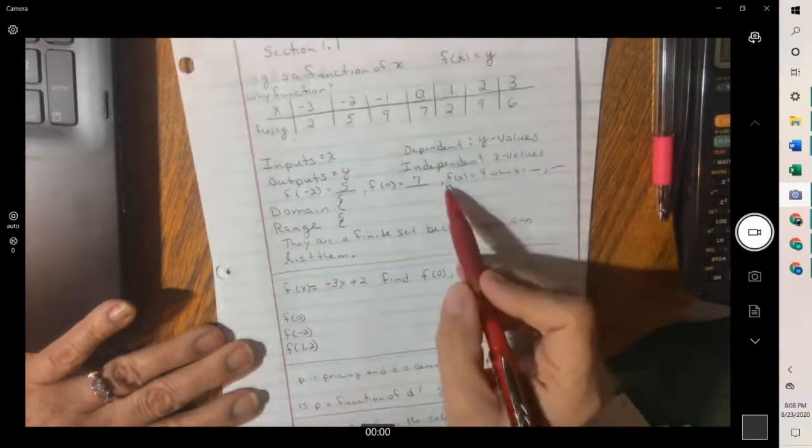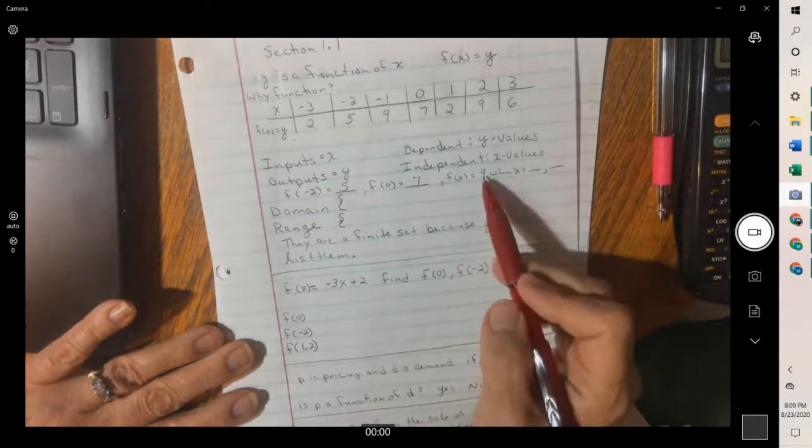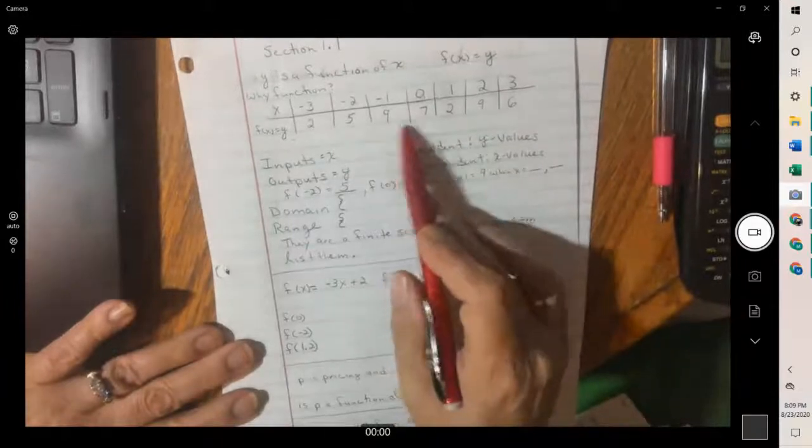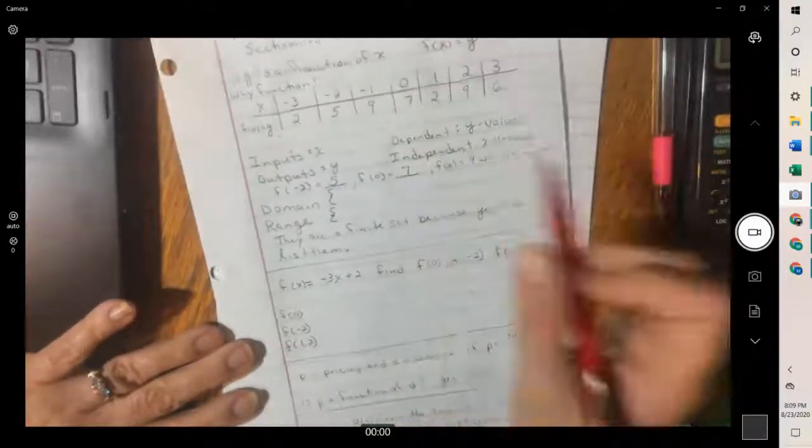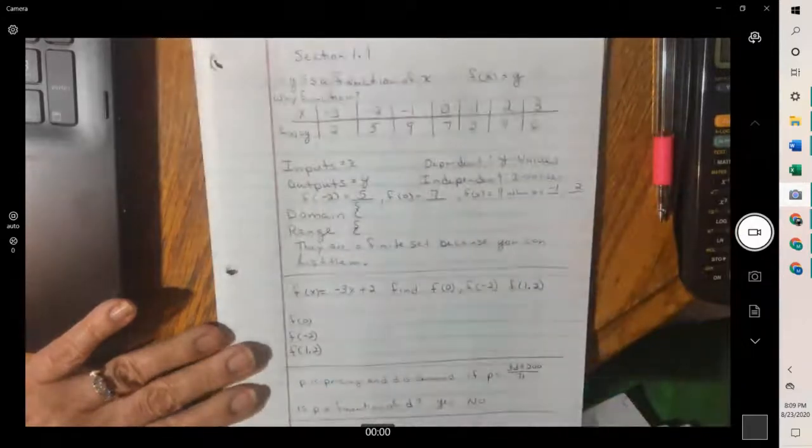The last one says f of x equals nine. So it's doing the opposite. It's saying when y is nine, what is x? Notice we have two answers. When y is nine, it's a negative one and a two. And you would list both of them.